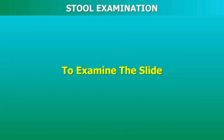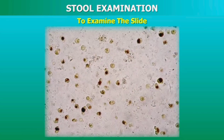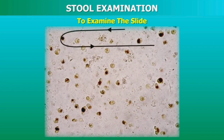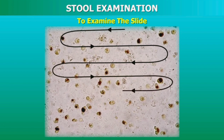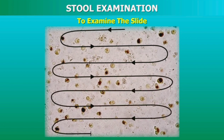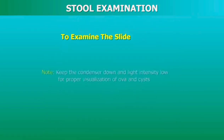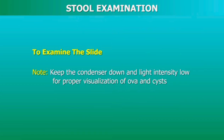To examine the slide: Put the slide with the mounts on the microscope stage and focus on the mount with the low power objective first. Systematically scan the entire cover slip area using the 10x objective in a zig-zag manner. If something suspicious is seen, a higher magnification may be necessary. Note: It is preferable to keep the condenser down and the intensity of the light low for proper visualization of the ova and cysts.